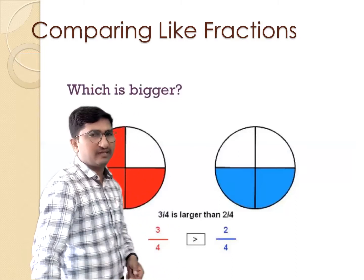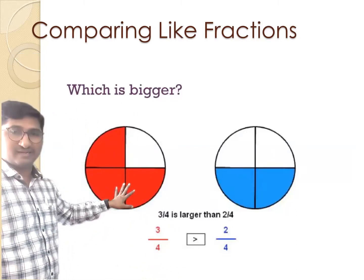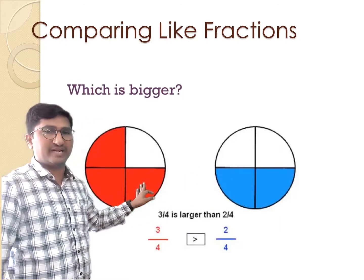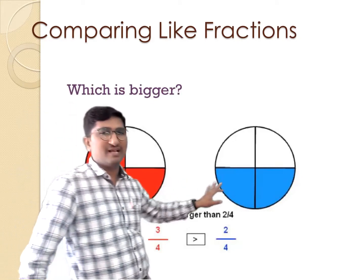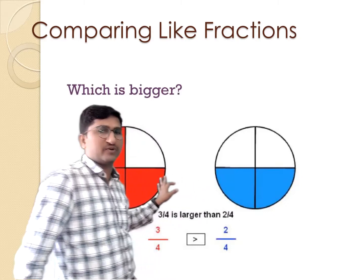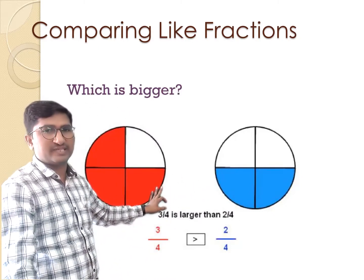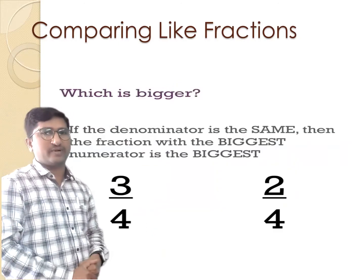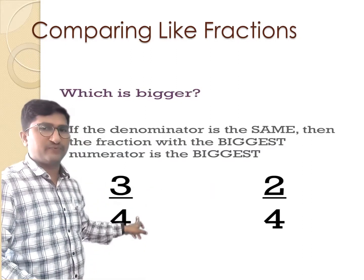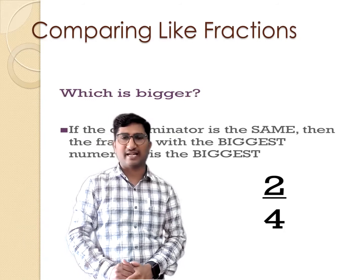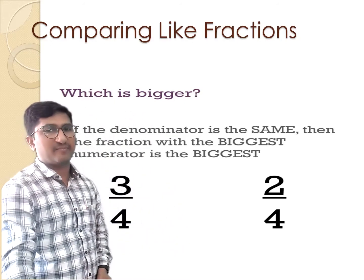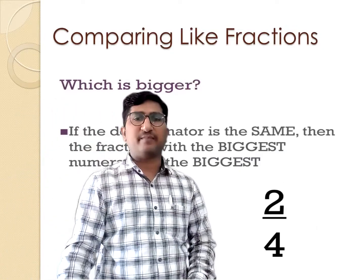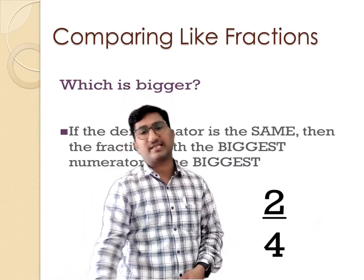Moving forward, I will show an example with figures also. 3 upon 4 and 2 upon 4: the 3 upon 4 part is shaded with red color and 2 upon 4 is shaded with blue color. So 3 upon 4 is bigger than 2 upon 4. The numerators are different but the denominators are the same, so you can easily compare: 3 upon 4 is greater than 2 upon 4. This is the way to compare fractions when the denominators are the same.